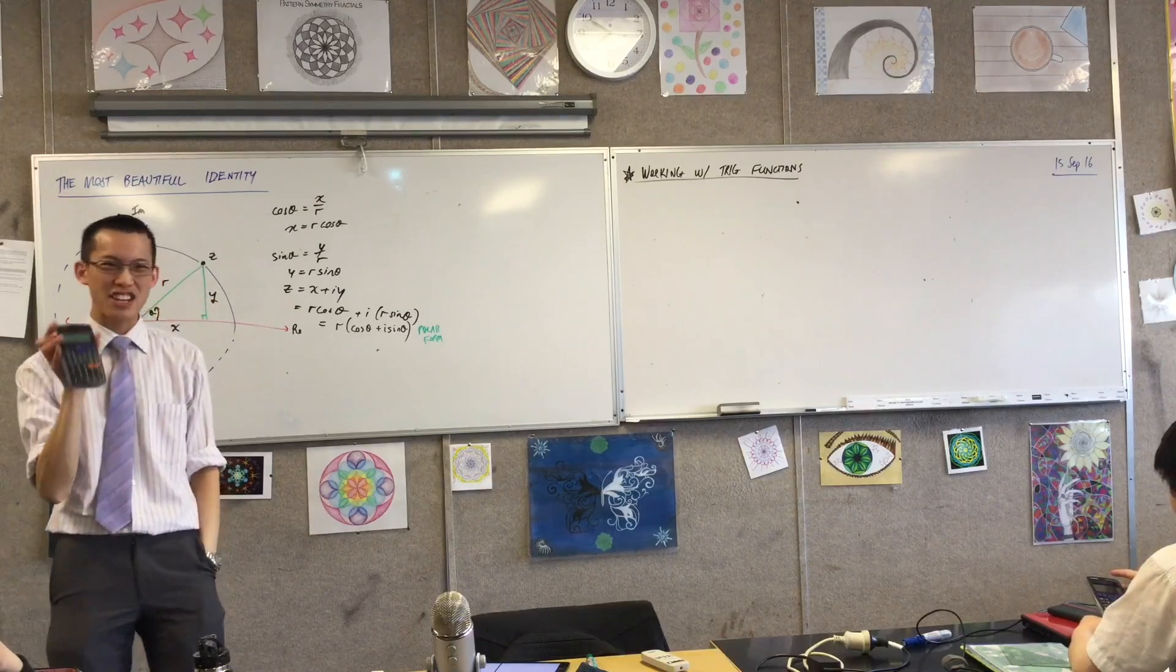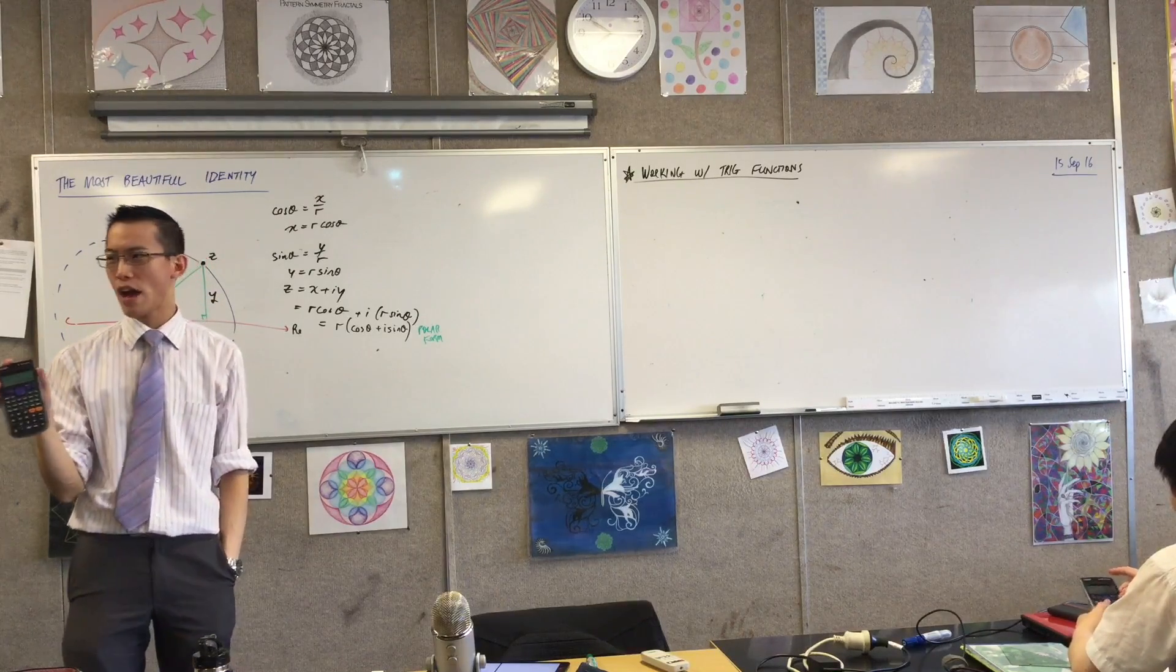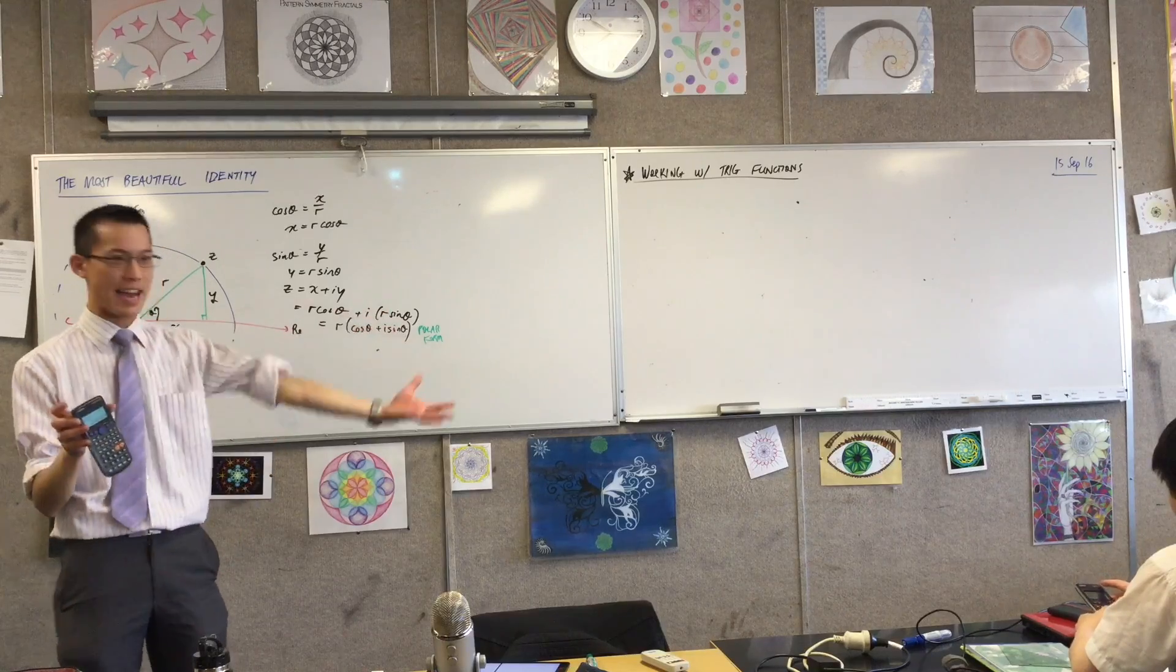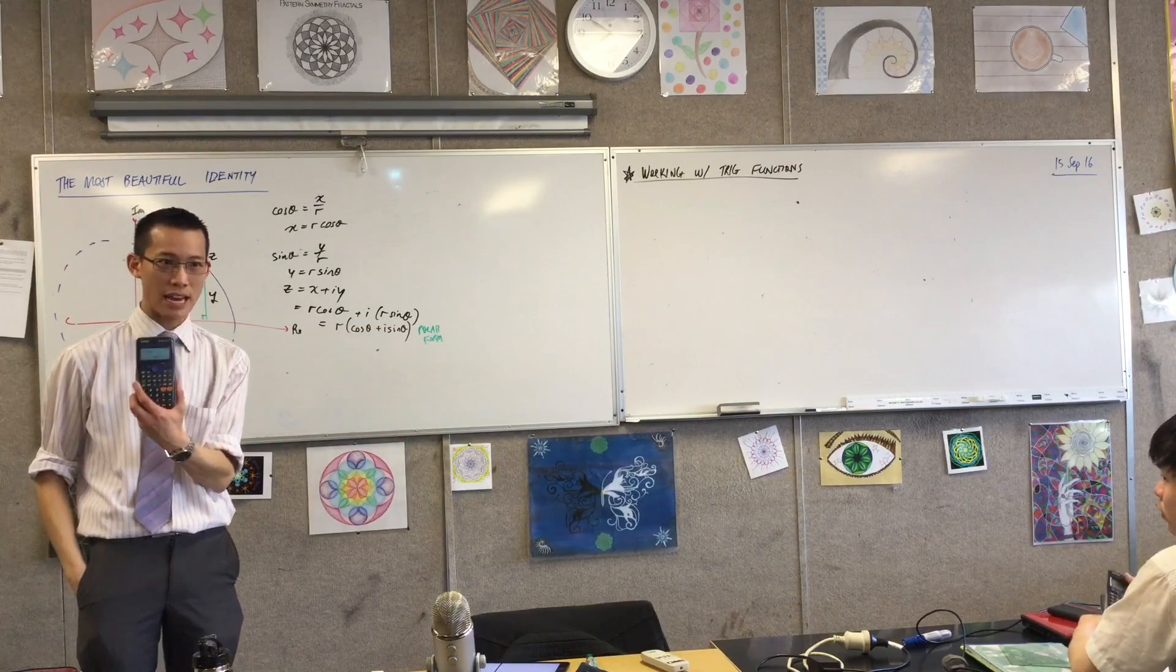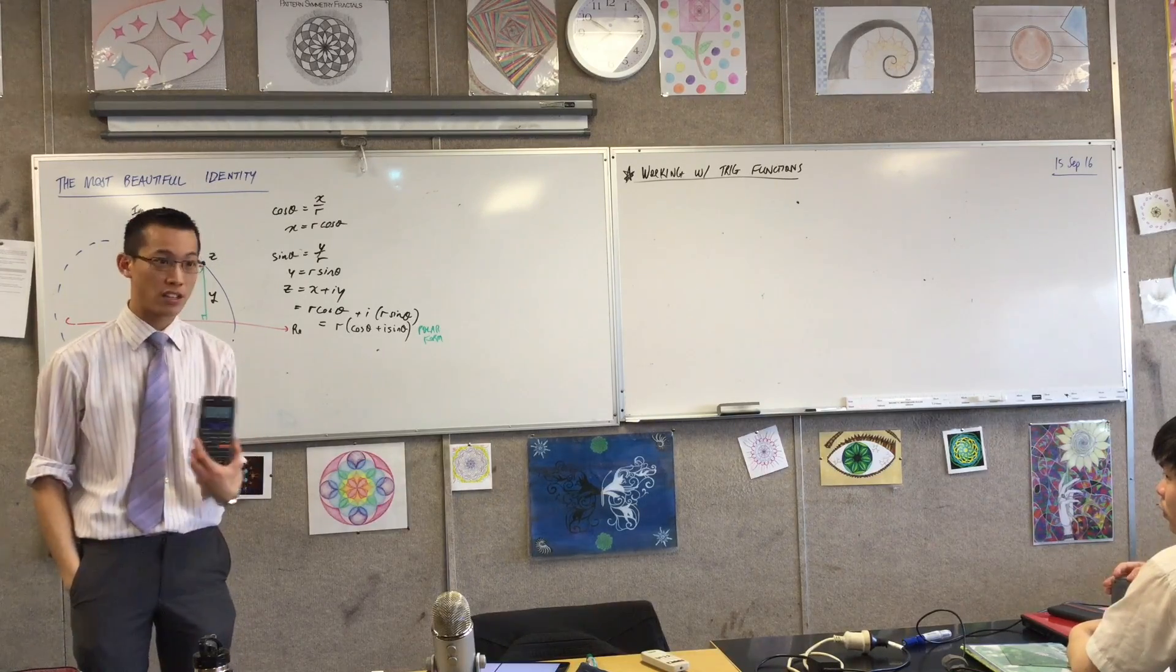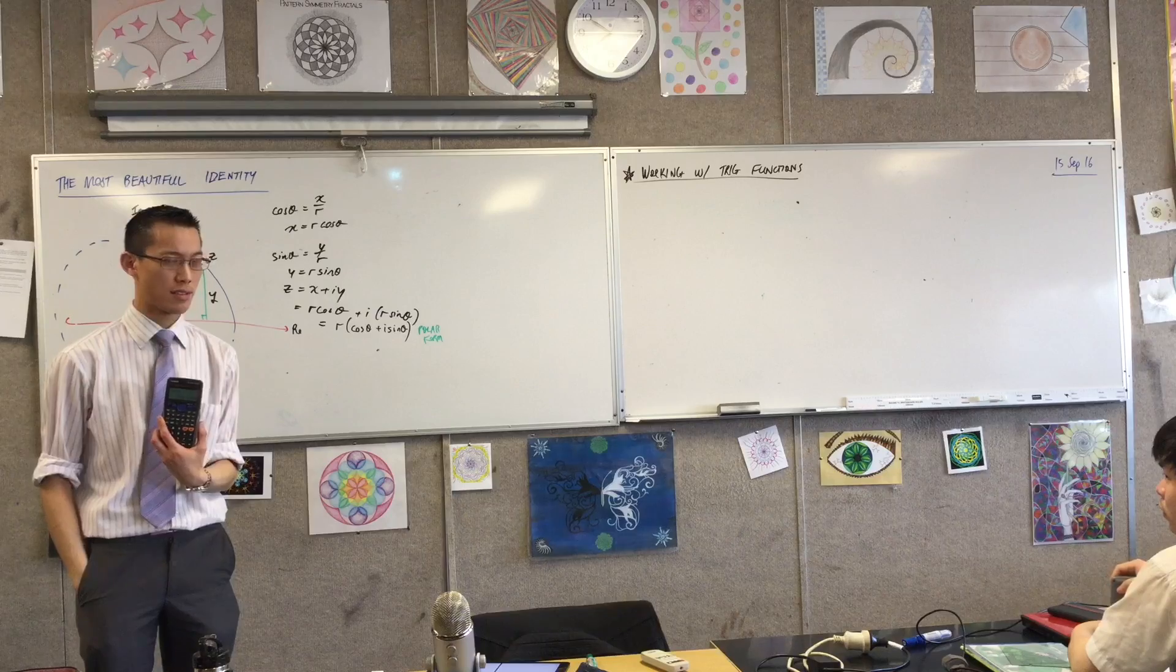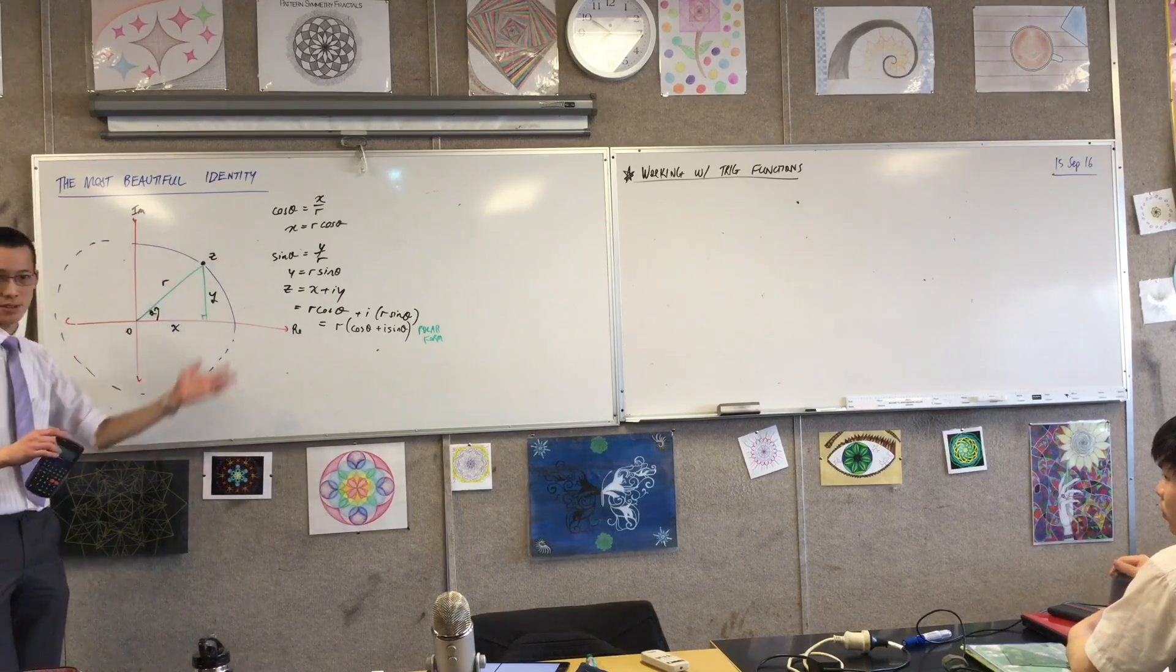But how did this calculator know that that's what sine 23 is? For that matter, how did it know what sine or cosine or tan of any angle is? Well, a human had to teach it how to do that. And that's really hard, because all computers can do, basically, is addition. It's all they can do, just really, really fast.